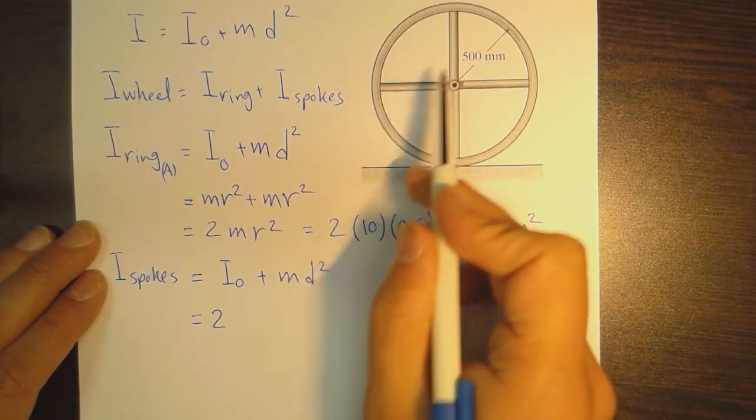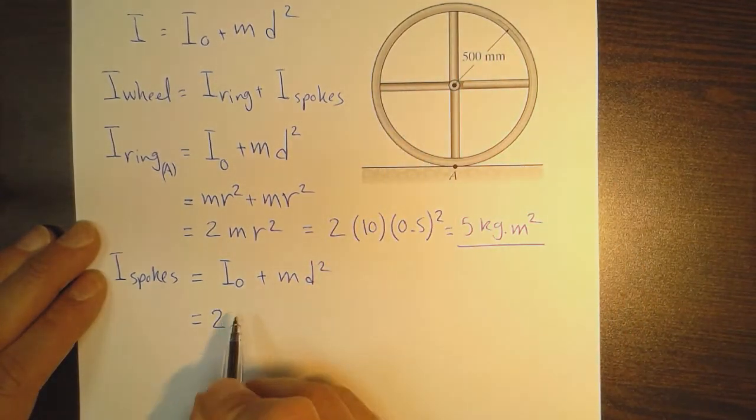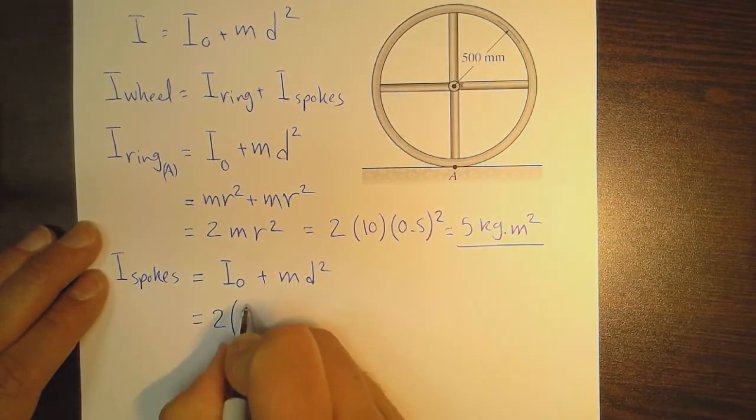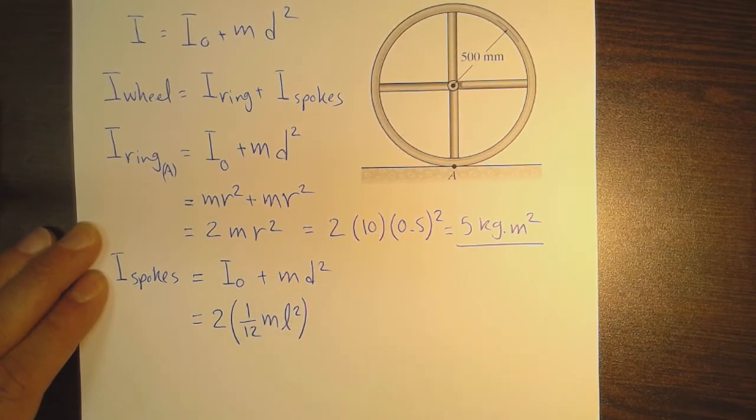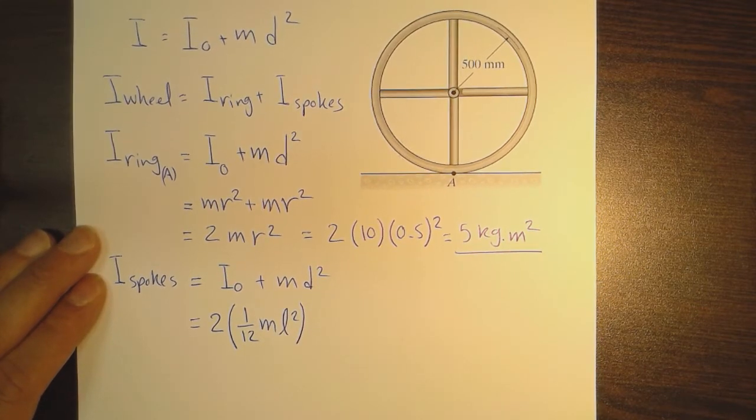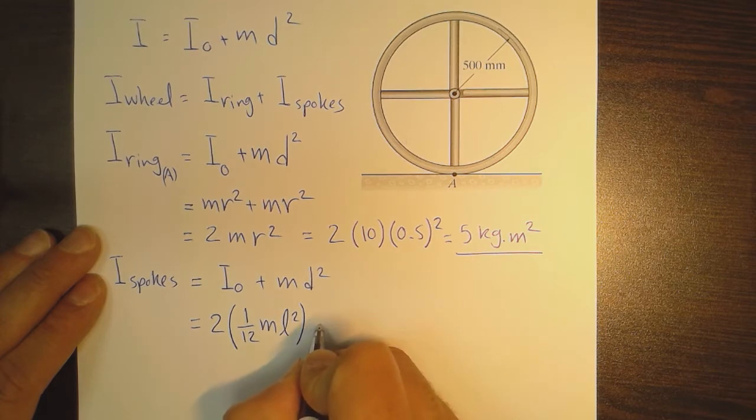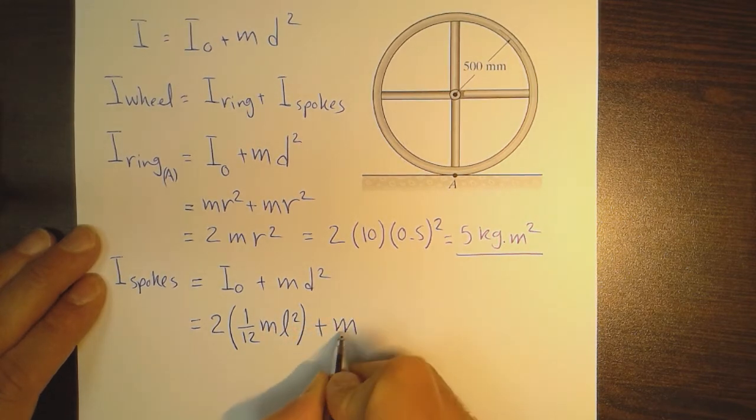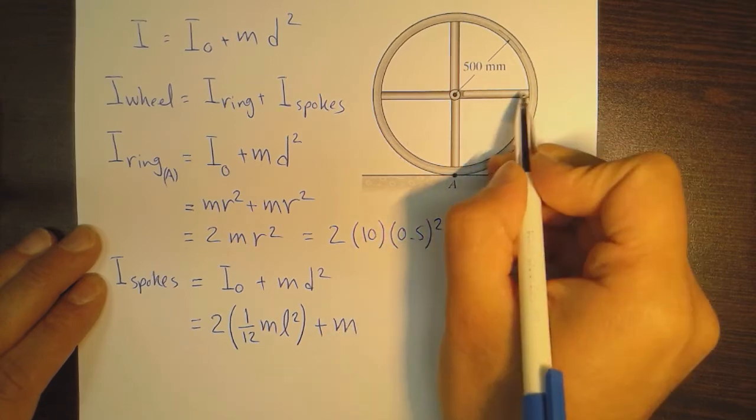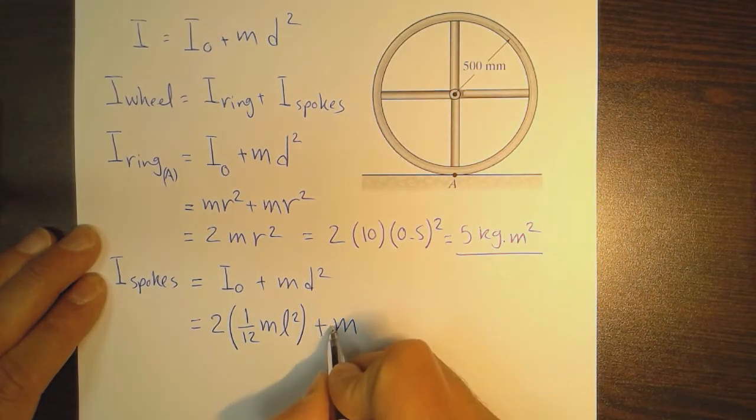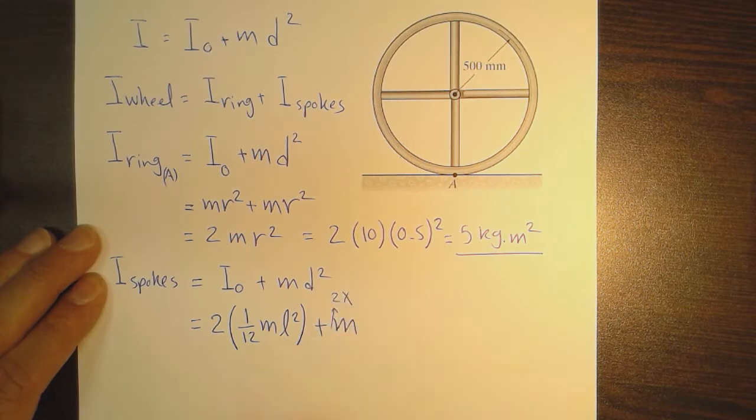For I₀, we have two rods. The moment of inertia of one rod around its centroid is (1/12)ml². Plus m, but we have two masses here, so this should be multiplied by two.